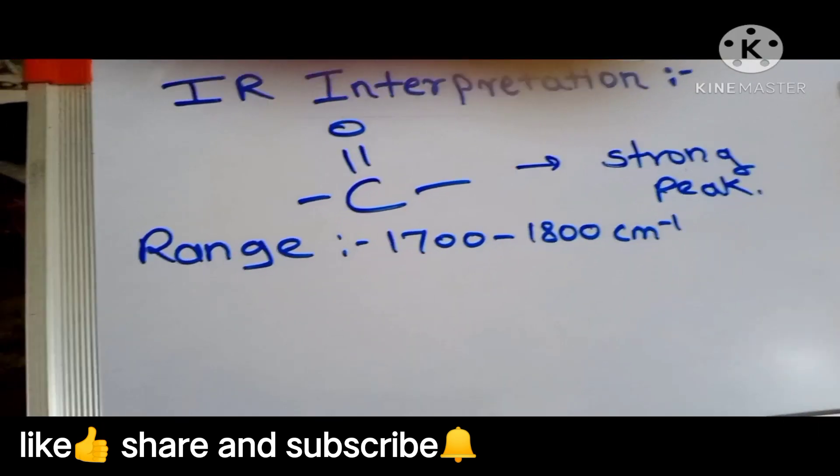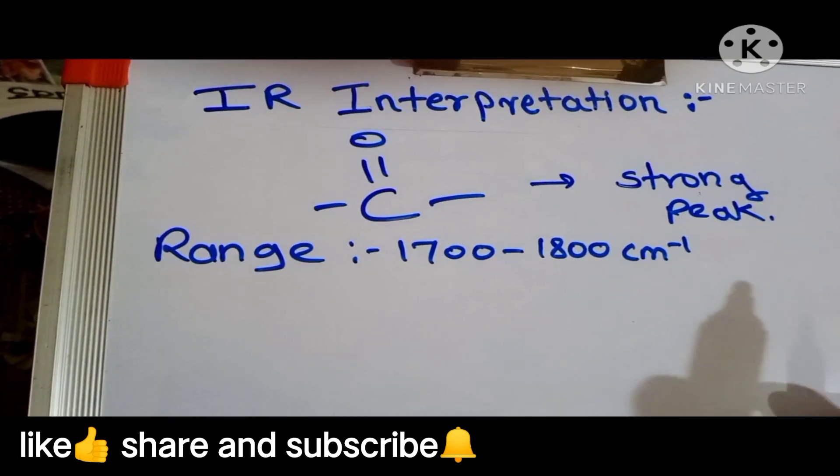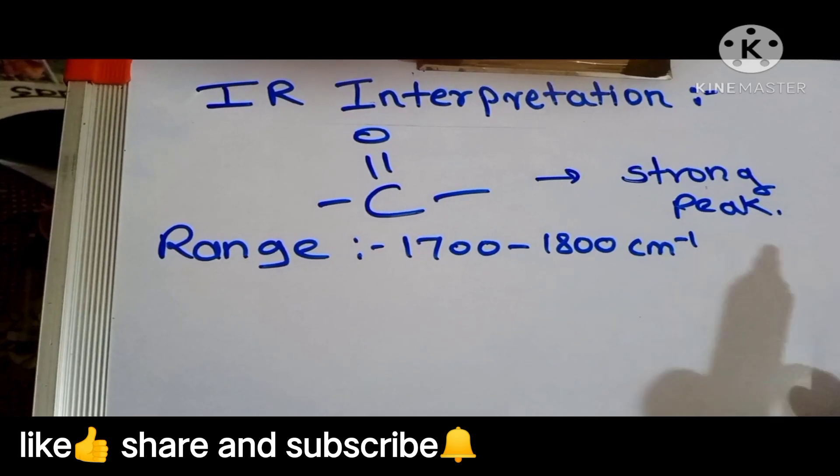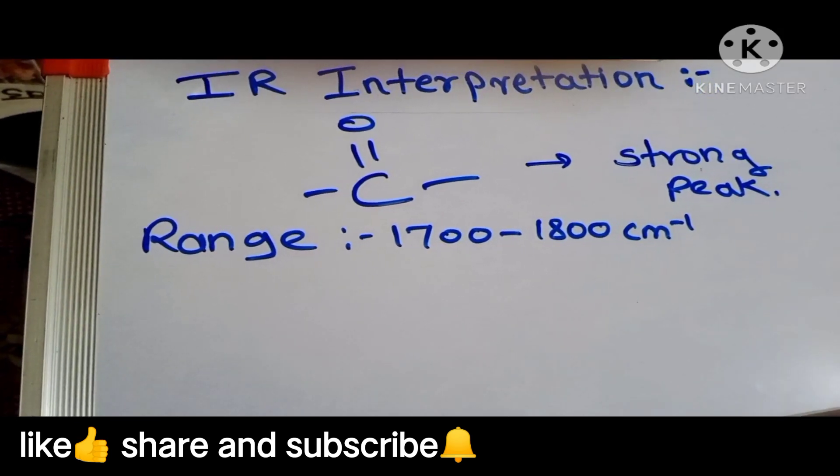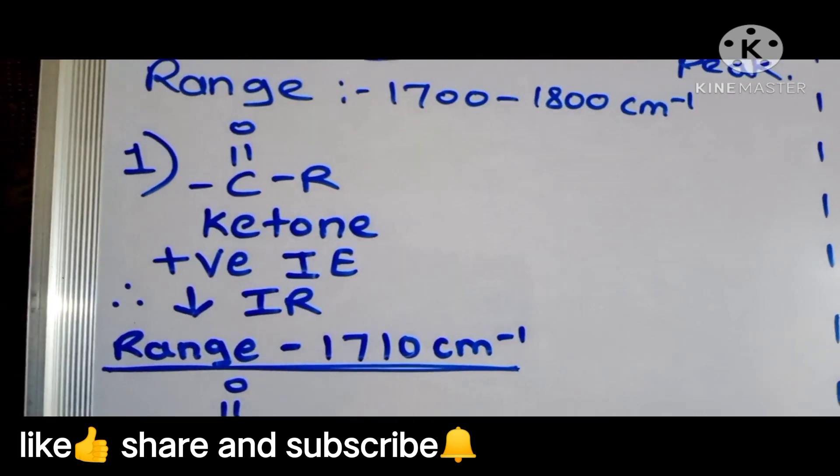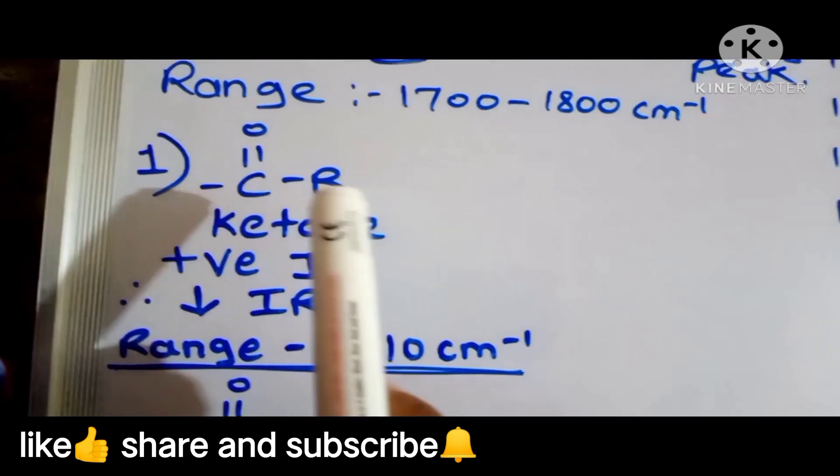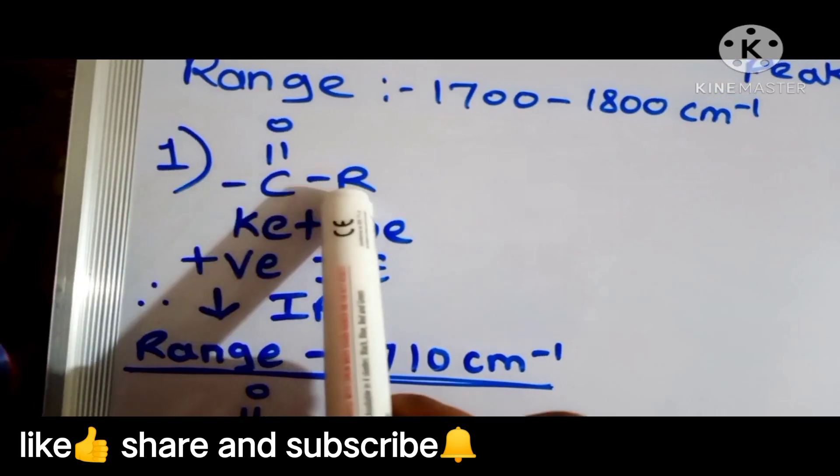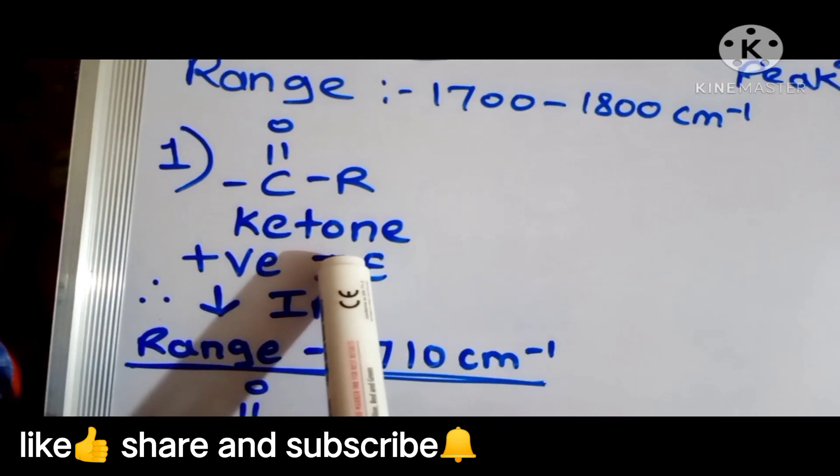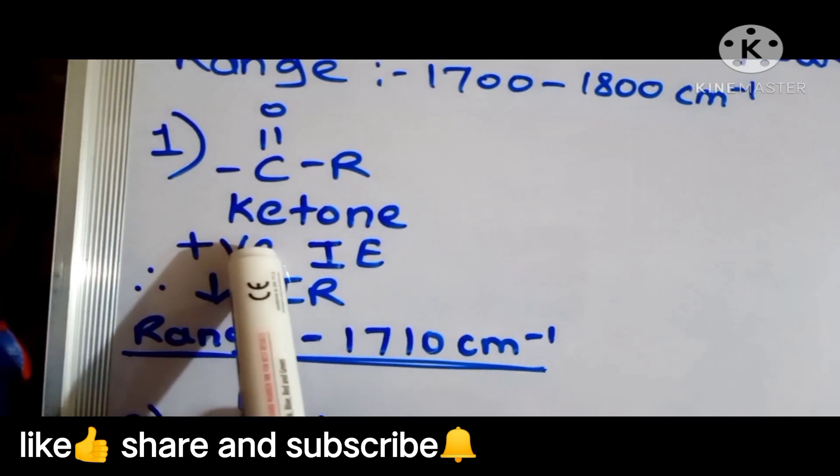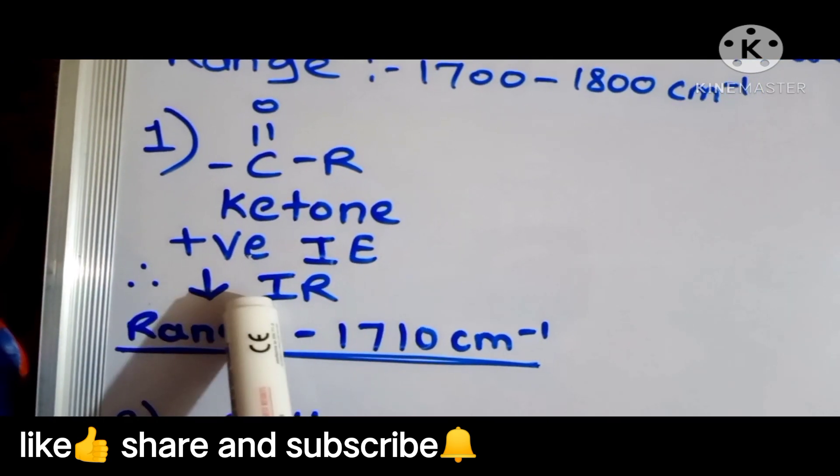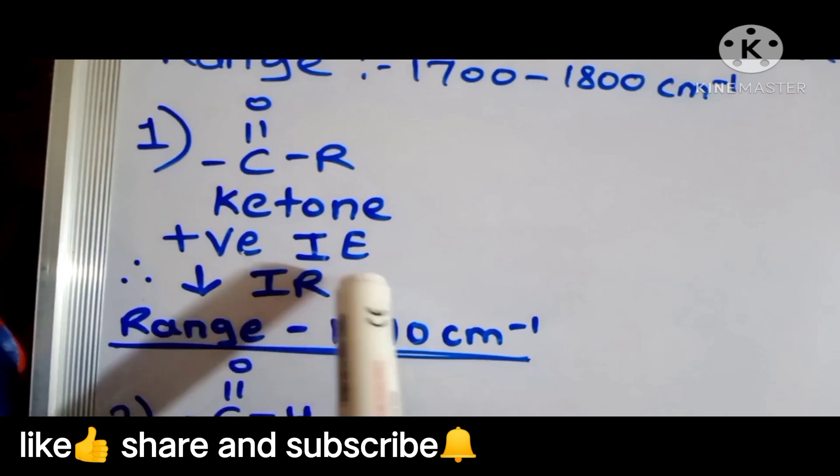Now guys, see I will give you a basic six or seven functional groups and their IR ranges. First functional group is the ketone in which ketone has the C double bond O R, which shows positive inductive effect. As there is positive inductive effect, it shows less IR range, means there is decrease in IR range, so range is the 1710 centimeter inverse.